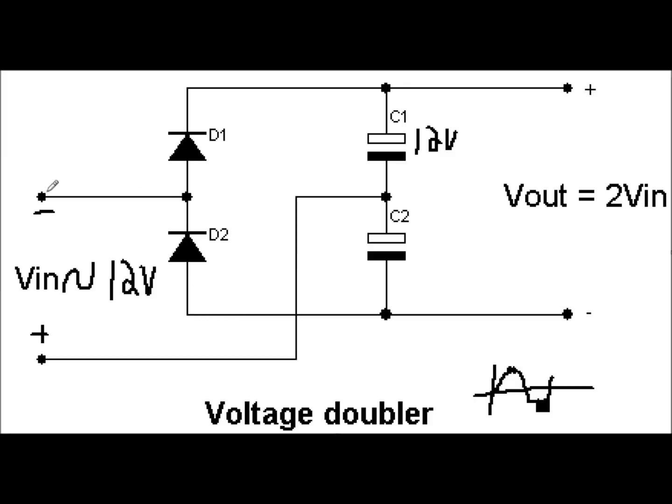Meaning that current's now going to want to flow into this power supply, and that means this diode is now going to be on, and this diode is going to be off.